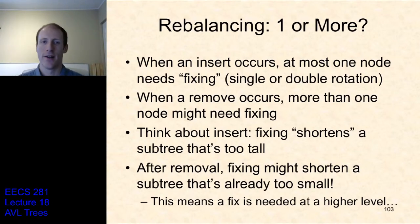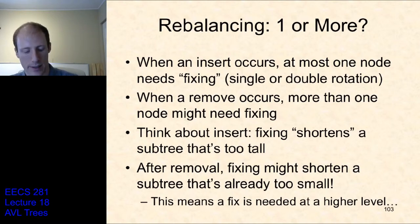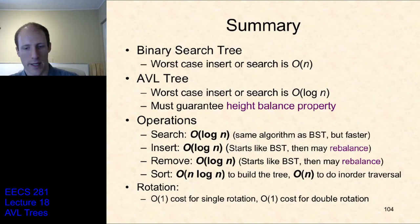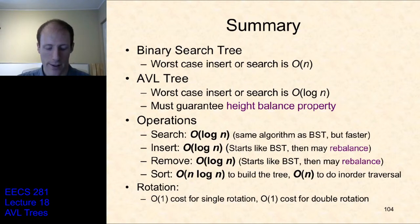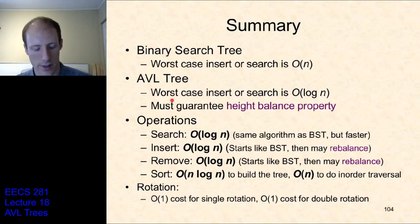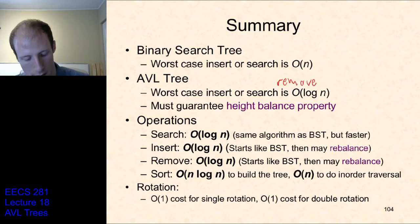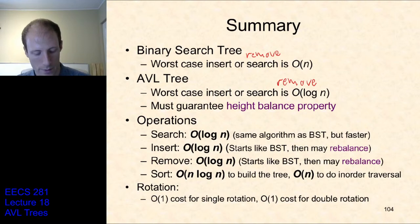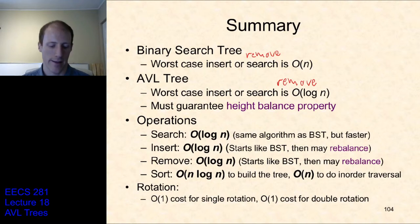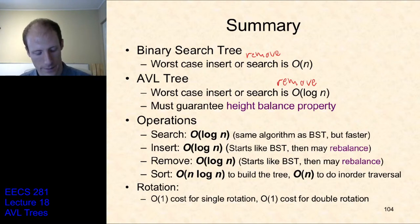When you do a remove, you might need multiple fixes because you're shortening a subtree that is already too short. Our binary search tree has worst case insert, search, and remove of O(n), but our AVL tree has worst case insert, search, and remove of O(log n). Essentially for all operations, our AVL tree has a worst case equal to the average case of the normal binary search tree. A rotation is constant time, whether that's for a single rotate or a double rotate.